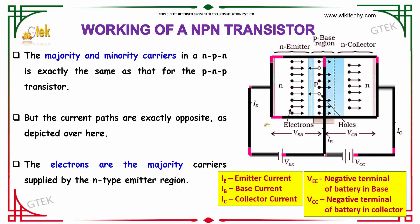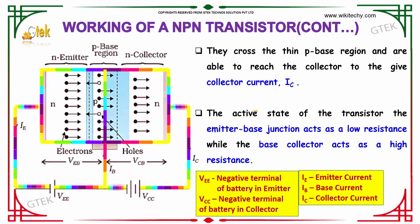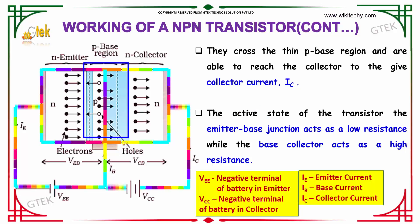The electrons are the majority carriers supplied by the N-type emitter. They cross the thin P-base region and are able to reach the collector to give the collector current IC.